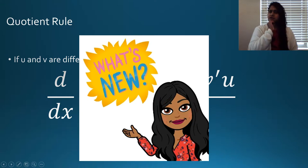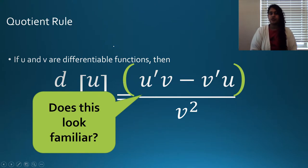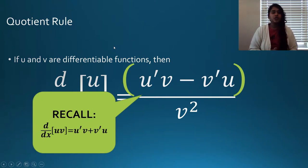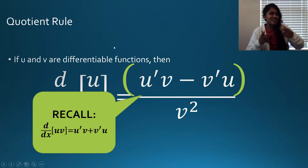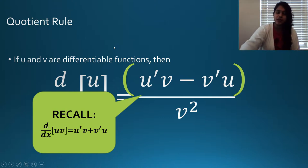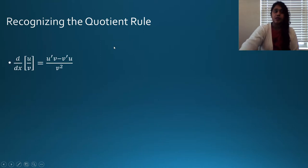That doesn't seem very new — that seems rather similar. And why does it feel so familiar? Well, looking at just that numerator, we can recall the product rule is u prime v plus v prime u. So the only difference is that we're using a difference — instead of addition, we're using subtraction. And then of course it's now a fraction over v squared.